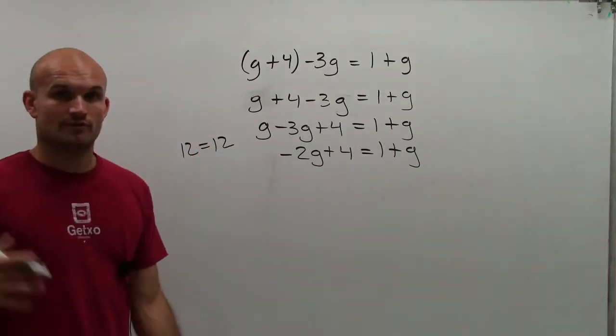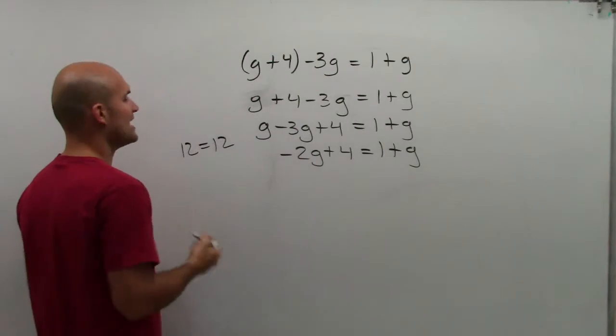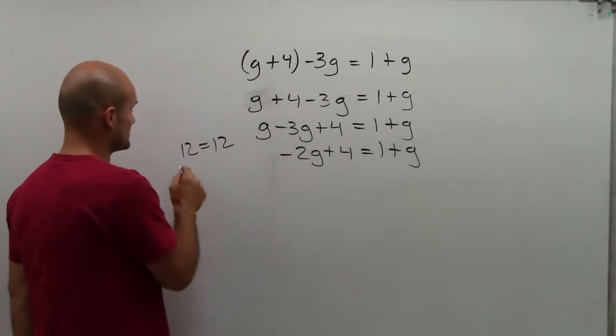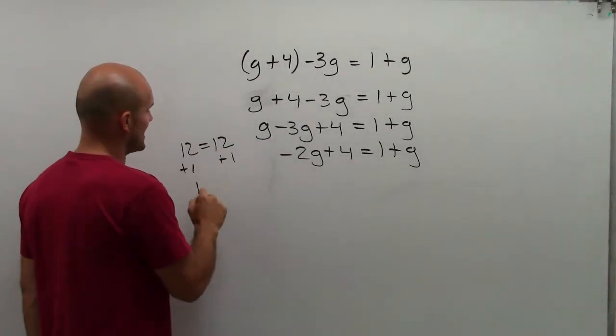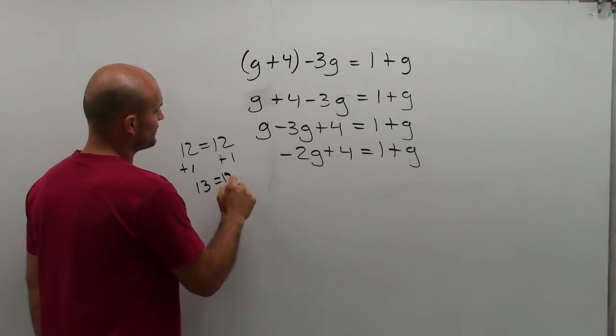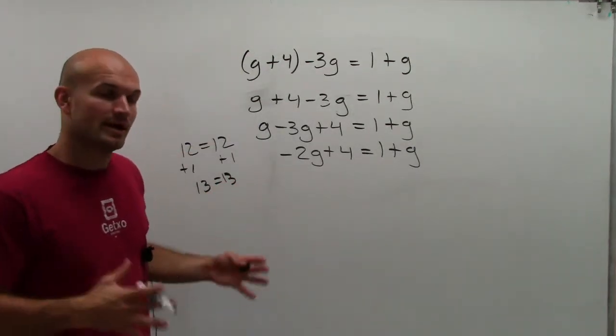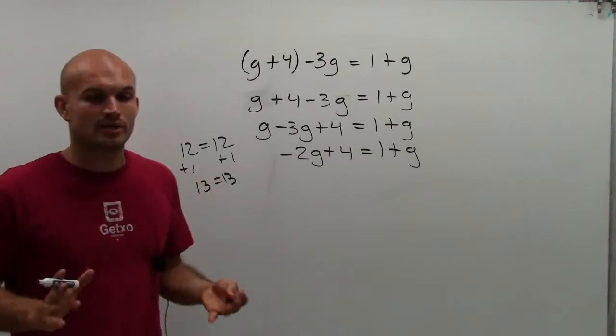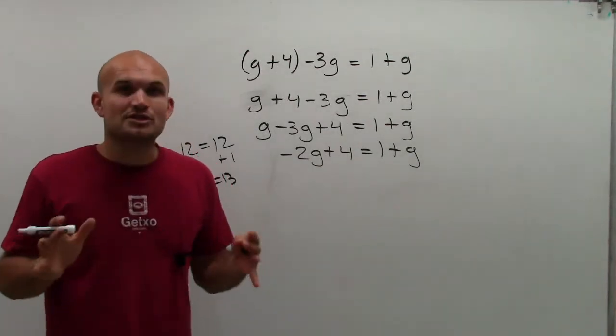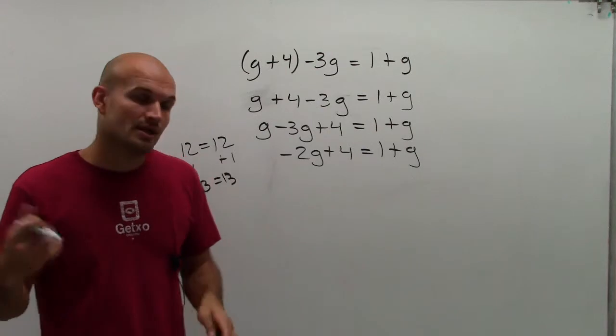If I tell you that 12 equals 12, you obviously know that. It doesn't matter what operation I do to 12. As long as I do it to both sides, I produce equivalent equations. These equations are both true. So the important thing is just make sure you do whatever you do to one side, you do to the other side.